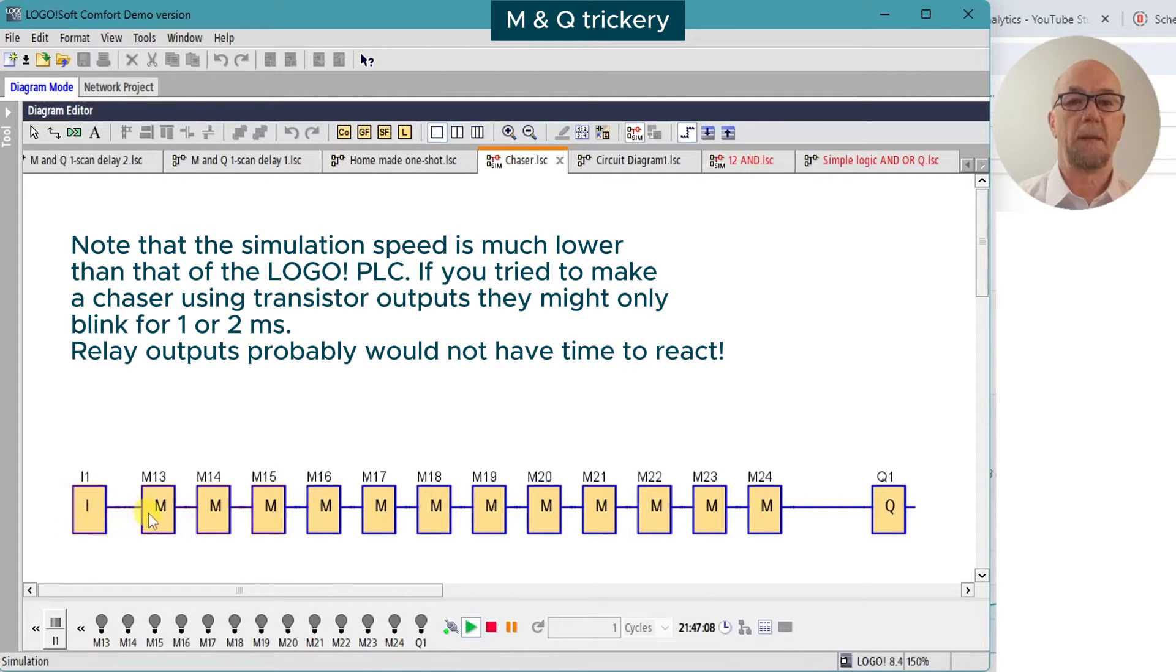Well, we know from our previous discussion that when input 1 turns on, we'll turn on the input to M13, but we know that the output M13 won't turn on until the end of the scan. So all the other logic is executed, but all the inputs to these are still off, and so Q1 remains off.